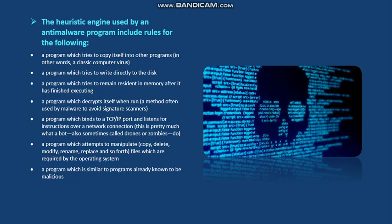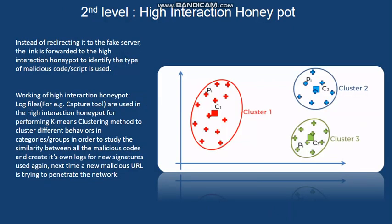The low interaction honeypot, instead of redirecting to a fake server, forwards the malicious link to the high interaction honeypot. This is the second level of our model. The high interaction honeypot identifies which type of malicious code or script is used. Log files are used in the high interaction honeypot for performing k-means clustering to cluster different behaviors into categories or groups, in order to study the similarity between all malicious codes.